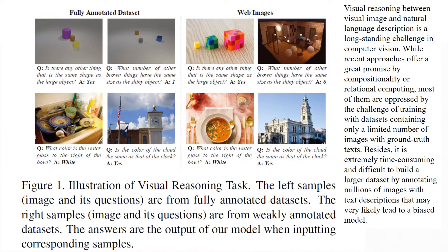Visual reasoning between visual images and natural language description is a long-standing challenge in computer vision. While recent approaches offer great promise through compositionality or relational computing, most of them are hampered by the challenge of training with datasets containing only a limited number of images with ground-truth texts. Besides, it is extremely time-consuming and difficult to build a larger dataset by annotating millions of images with text descriptions, which may very likely lead to a biased model.